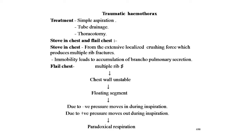Stove-in chest and flail chest: stove-in chest results from an extensive localized crushing force which produces multiple rib fractures, causing depression of the chest wall in that region. Relative immobility leads to accumulation of bronchopulmonary secretions. Flail chest develops when multiple rib fractures occur anteriorly at or near the costochondral junction and posteriorly near the angles of the ribs, resulting in unstable chest wall fragments with no bony connection. These floating segments move inward during inspiration due to negative pressure in the pleural cavity, and outward during expiration due to positive pressure — this is called paradoxical respiration.